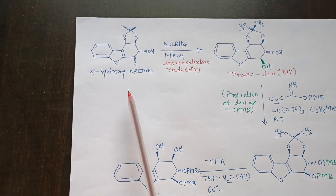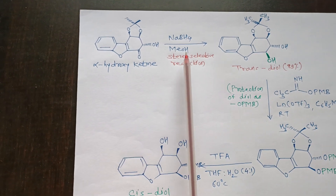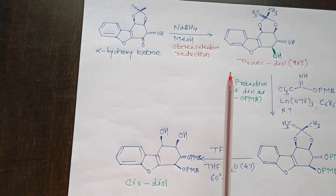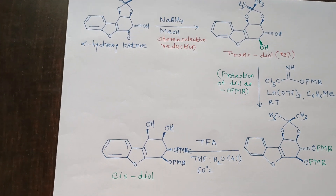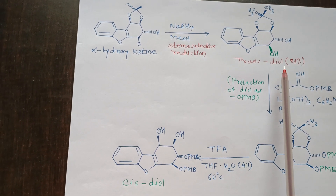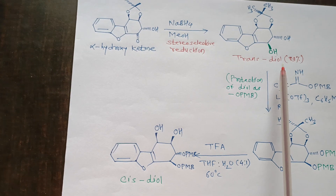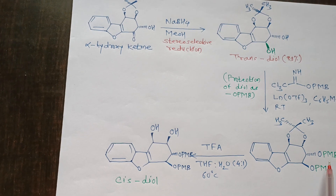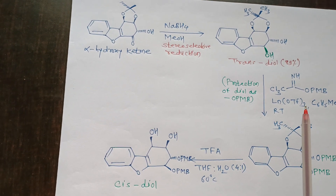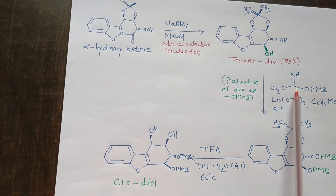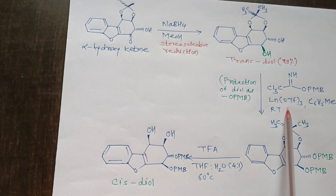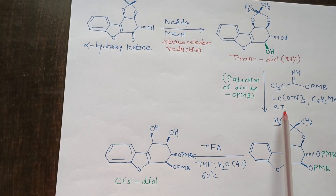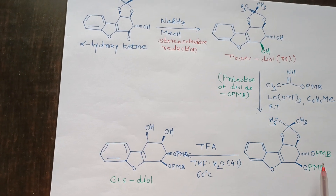This alpha-hydroxy ketone on reduction using sodium borohydride in methanol afforded exclusively the trans-diol. Protection of the trans-diol as an OPMB — that is paramethoxybenzyl ether — was carried out using the appropriate reagent in the presence of a lanthanide triflate as a Lewis acid catalyst in toluene solvent at room temperature.